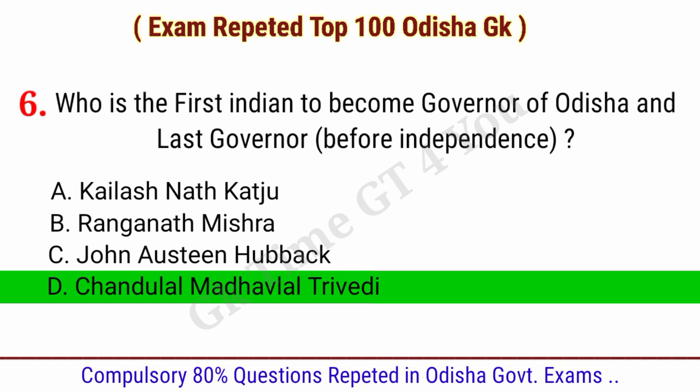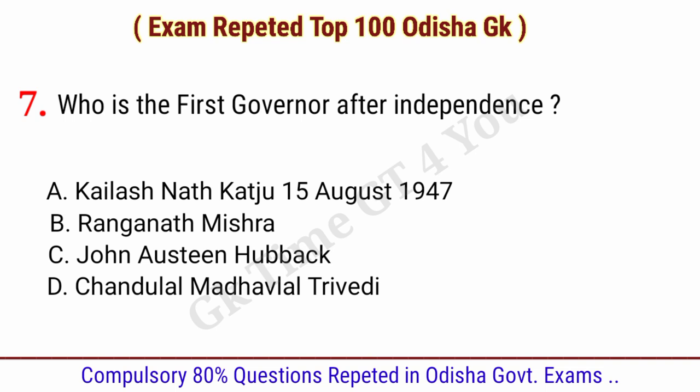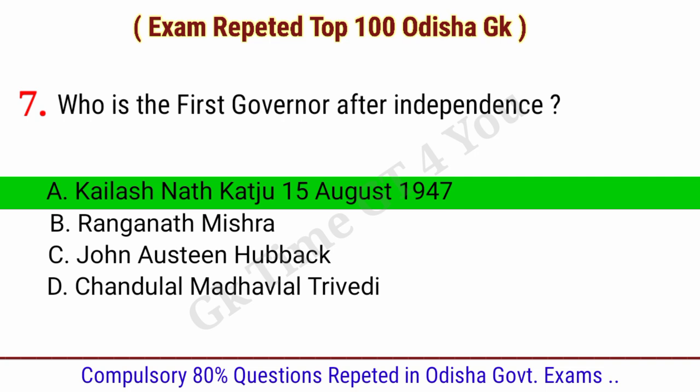Question number seven: Who is the first governor after independence? Right answer, option A: Kalyanath Katju, on 15 August 1947.